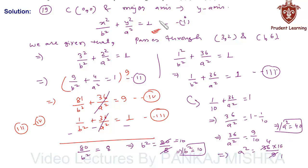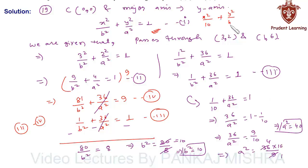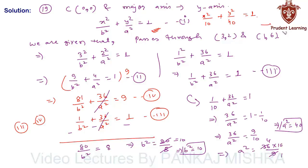Finally, substituting the values of a² and b² in equation 1, we get the equation of the required ellipse: x² over 10 plus y² over 40 equals 1. This completes our solution for question 19.